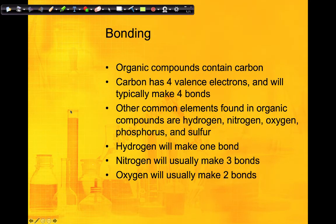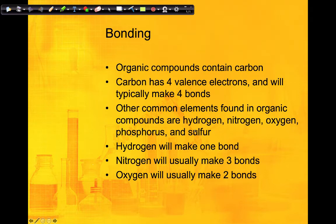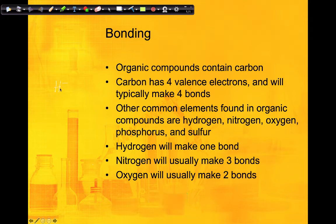To refresh you on bonding, you need to be able to draw a Lewis structure. Carbon has four valence electrons, so typically it makes four bonds — in an organic compound it always makes four bonds. Other elements found in organic compounds include hydrogen, nitrogen, oxygen, phosphorus, and sulfur. Hydrogen only makes one bond, so you should never see more than one bond coming from an H. Nitrogen will usually make three bonds, and oxygen will make two.